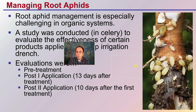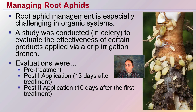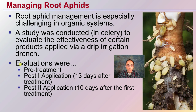Root aphid management is especially challenging in organic systems. A study was conducted — at least in celery — to evaluate the effectiveness of certain products applied via drip irrigation drench. Evaluations were taken at pre-treatment, post-treatment one (13 days after application), and post-treatment two (10 days after the first treatment).